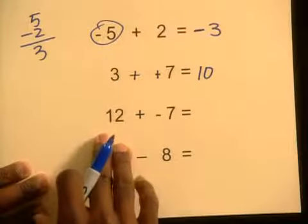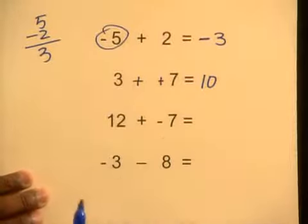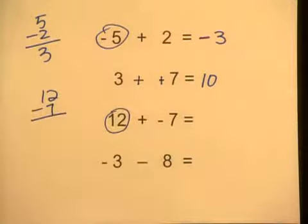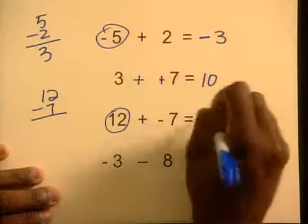Now the next problem. We have something positive — hot — plus something negative. One hot, one cold. What would the end result be, hot or cold? Hot, because twelve is bigger than seven, so we know it's going to be positive. Now the last step: twelve minus seven gives us five. Five is the answer.